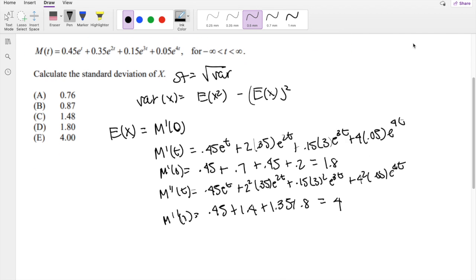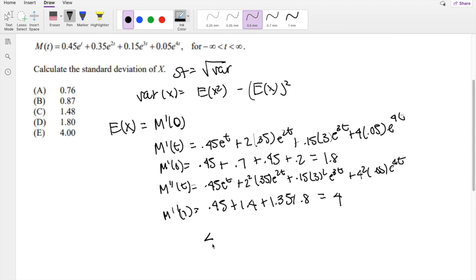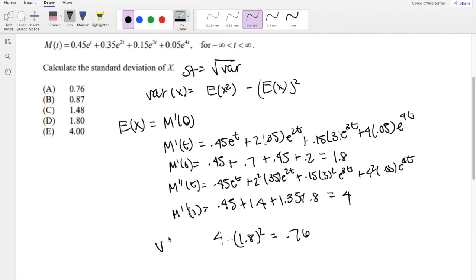So our variance is 4 minus 1.8 squared, which is equal to 0.76. This is our variance, but we're looking for standard deviation, which is just the square root of 0.76, which is equal to 0.87177 repeating, which is approximately 0.87, which is our answer B.